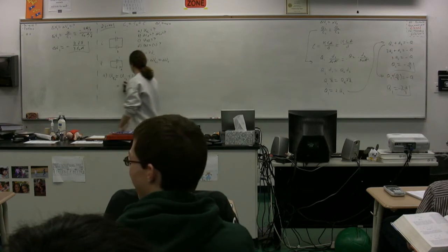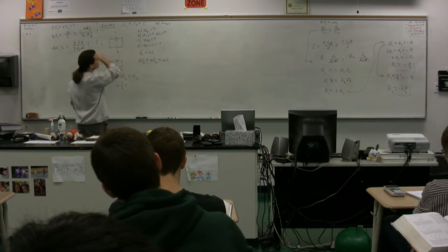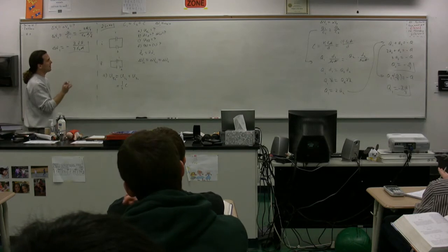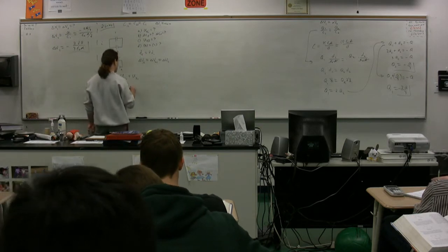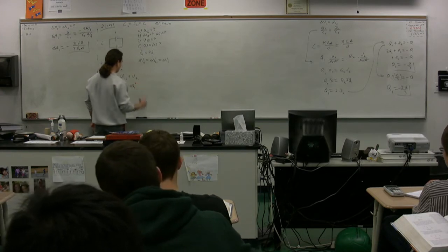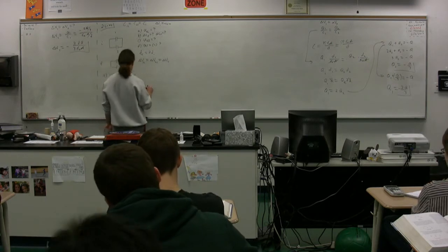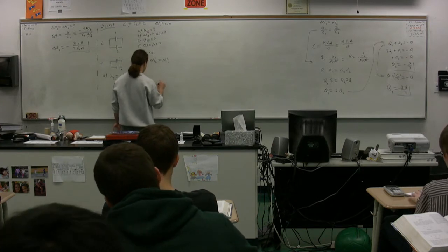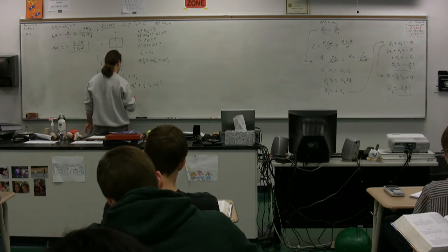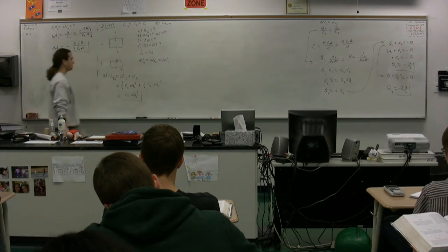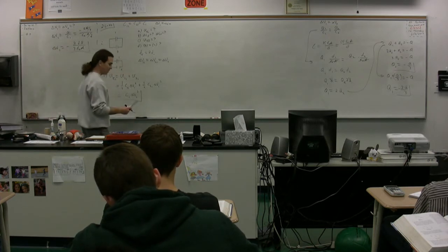The energy stored in a capacitor is one-half times the capacitance times the electric potential difference squared. So the total initial energy is one-half C_initial times ΔV_initial squared, plus one-half C_initial times ΔV_initial squared. The two one-halves add to one, giving us C_initial times ΔV_initial squared. That is the answer to Part A.